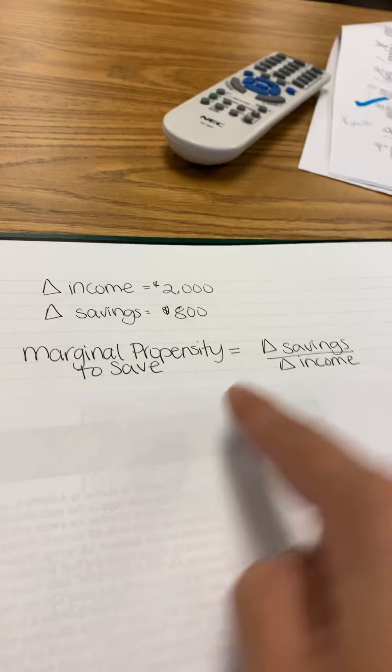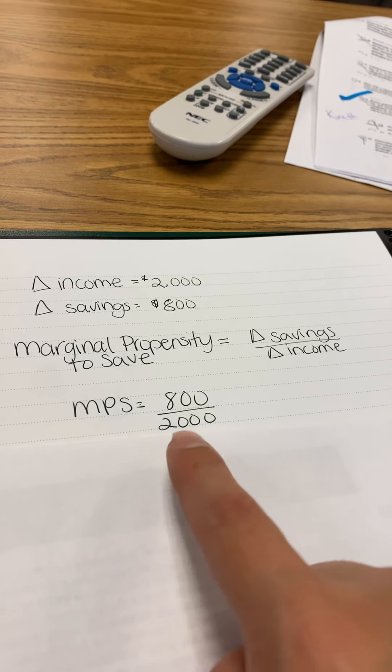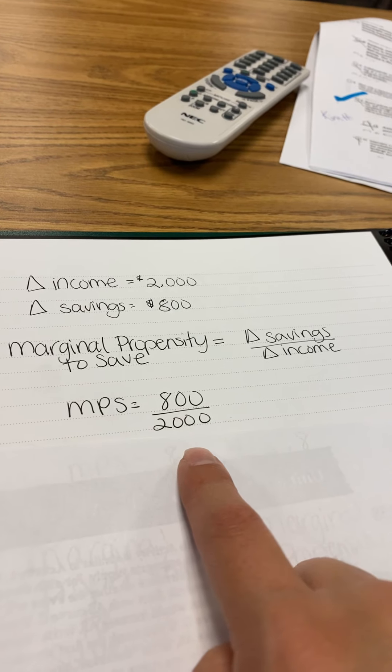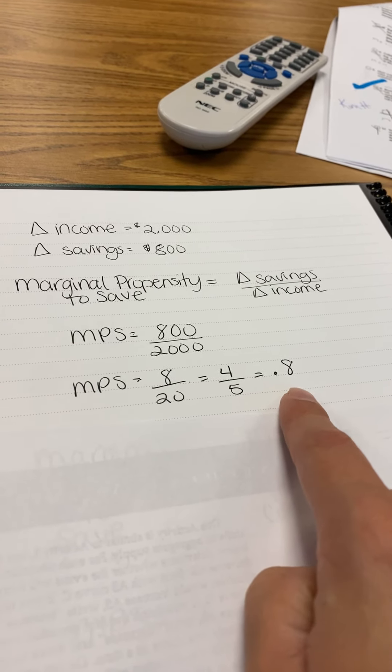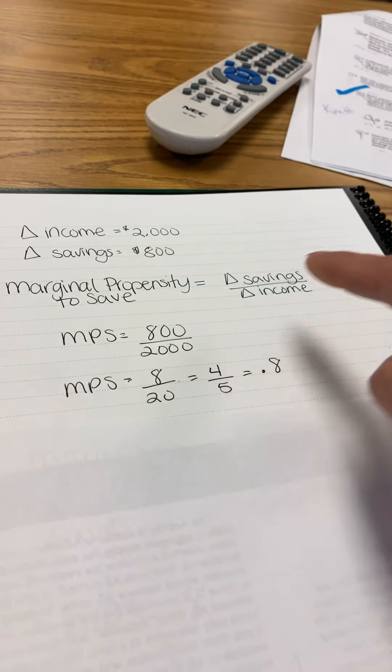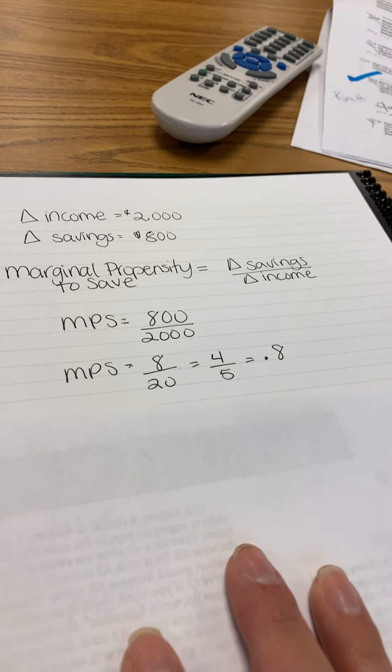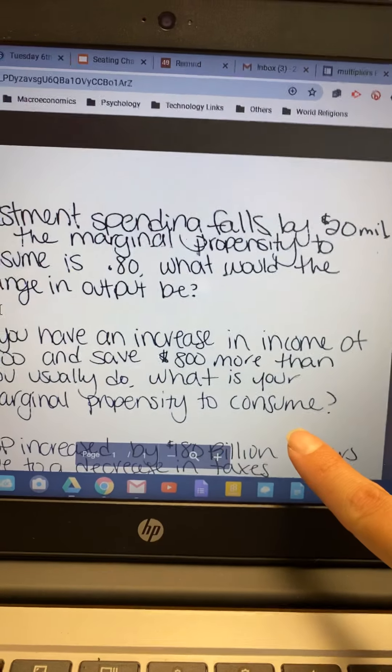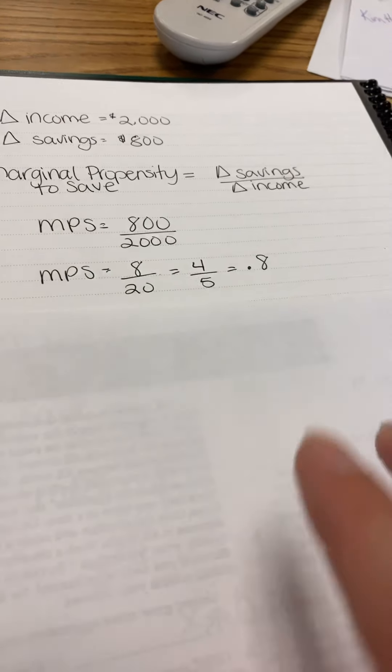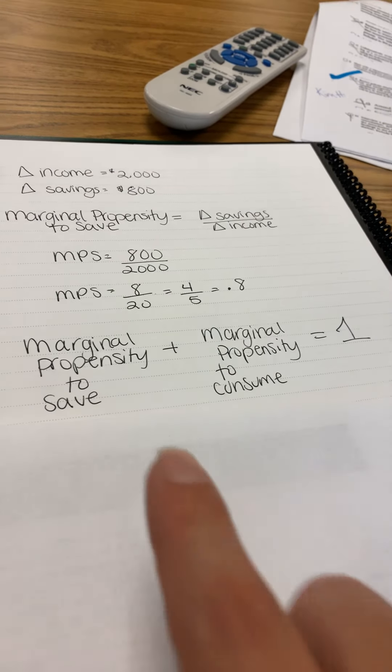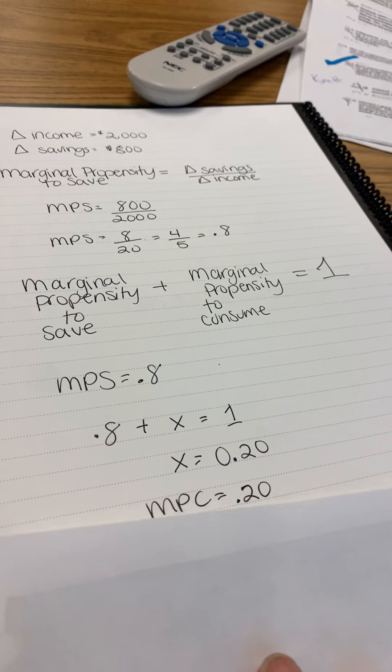Okay, so the marginal propensity to save formula is change of savings over change of income. The change of savings was $800, the change of income was $2,000. So you get 4 fifths, which in decimal form is 0.8. But remember, that was solving for MPS because we were using savings over income, not consumption. So we weren't solving for MPC, we were solving for MPS. The question asks what is the marginal propensity to consume, not save. Since we solved for MPS, and MPS plus MPC equals 1, if MPS is 0.8, then MPC must be 0.2.